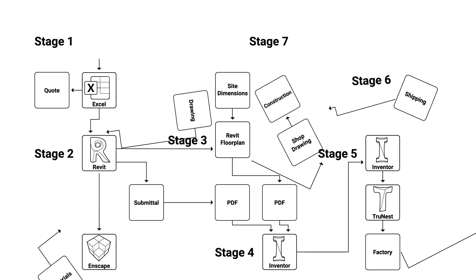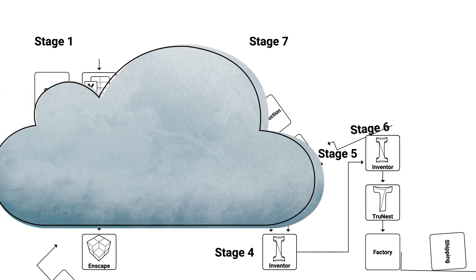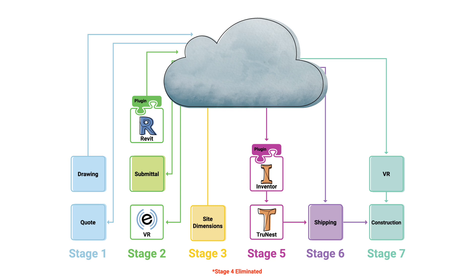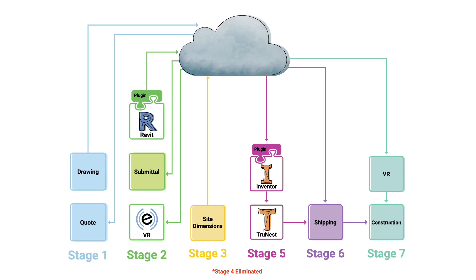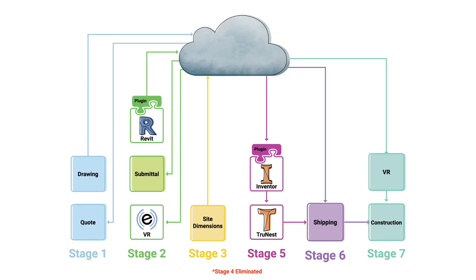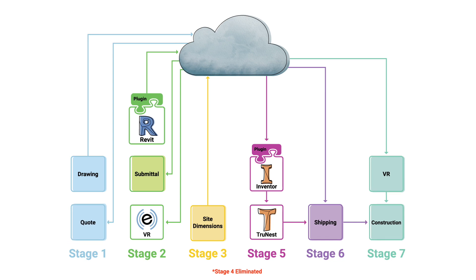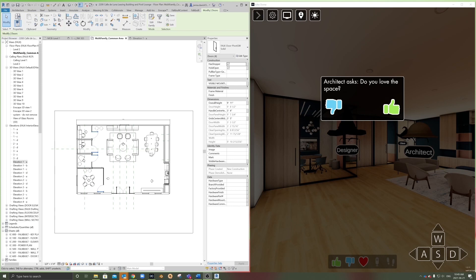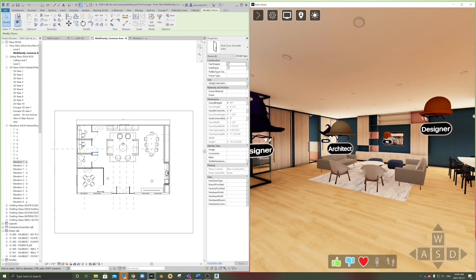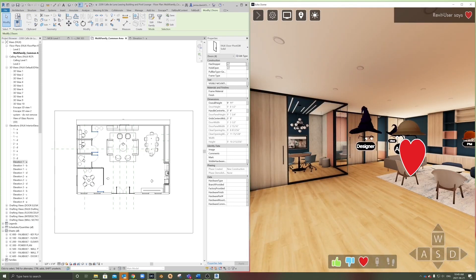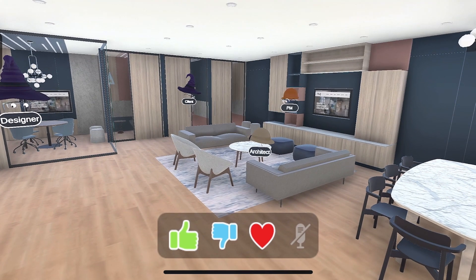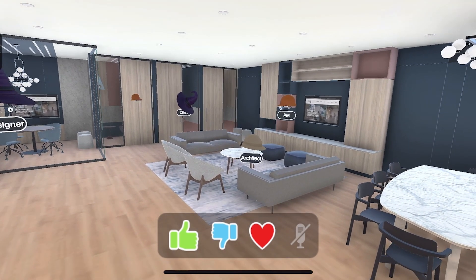Instead of the digital snakes and ladders you're stuck with now, streamline every stage of the process in the cloud. This revolutionary platform delivers real-time information where it's needed, when it's needed. From quoting, to Revit families, to experiencing the space and making changes, all the way to working with 3D models, including Inventor. Simplify the workflow, use the tools you've already invested in, and exponentially empower every step of the way, from conception right through to construction.